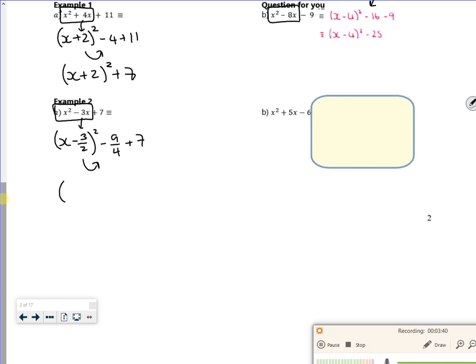So I've got x minus 3 over 2 all squared. 7 is the same as 28 over 4, so I've got minus 9 plus 28, that's going to be plus 19 over 4. But you've got to be careful with it, really, really careful.